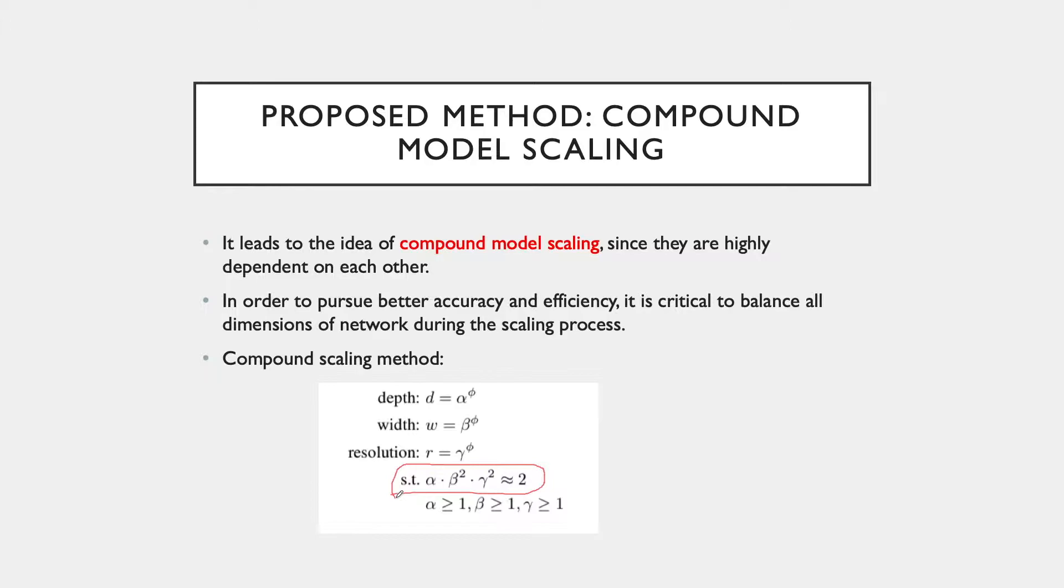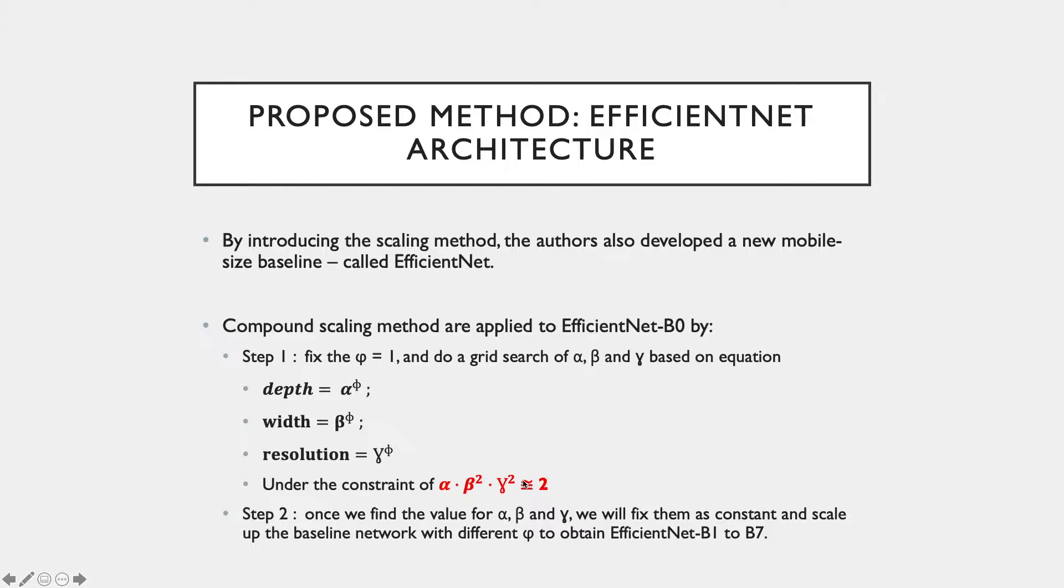So how do we come up with this constraint? As we know in a CNN, convolutional layers are the most computationally expensive part. Also, the FLOPs of a regular convolutional operation is almost proportional to d, w-squared, and r-squared. That is, doubling the depth will double the FLOPs, while doubling the width and resolution increases the FLOPs almost by four times. Therefore, in order to make sure that the total FLOPs don't exceed 2^phi, the constraint applied is close to 2. That's how we get this constraint.